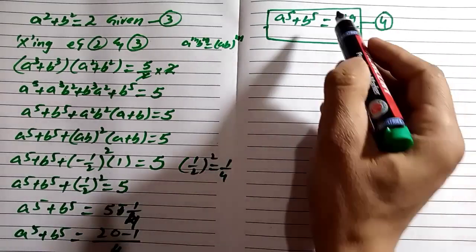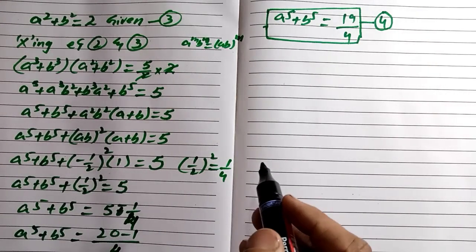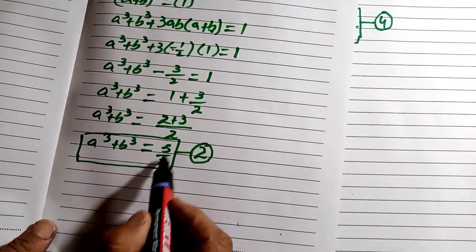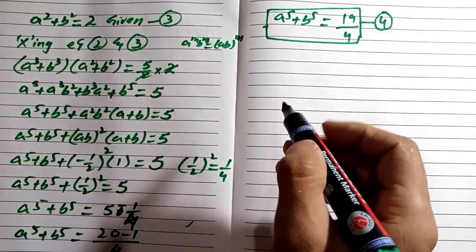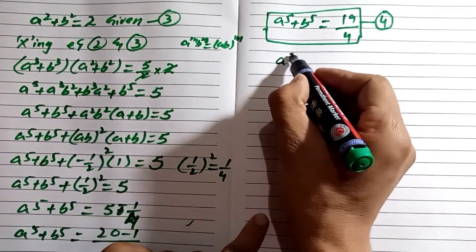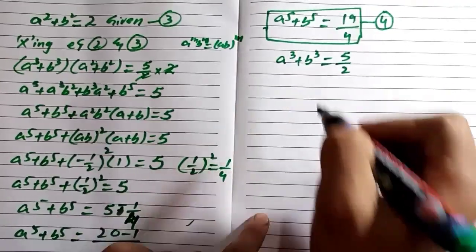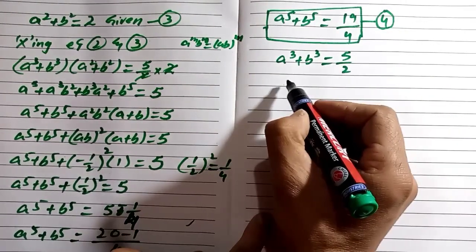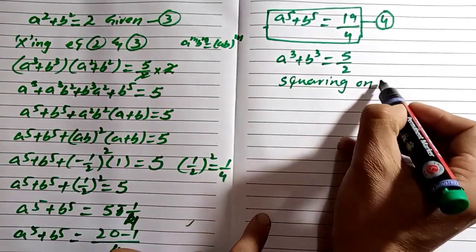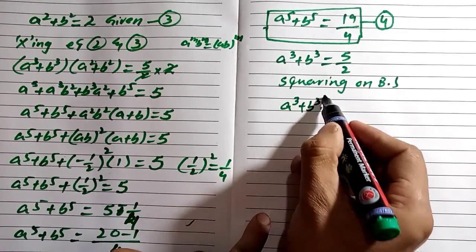Now we know a³ plus b³ equals 5/2 from equation 2. If we square both sides, we have (a³ + b³)² equals (5/2)². Expanding the left side using (a + b)² formula, we get a⁶ plus b⁶ plus 2(ab)³.